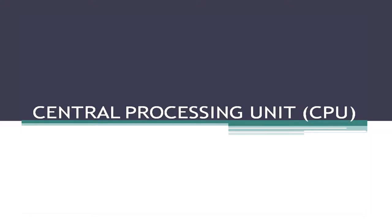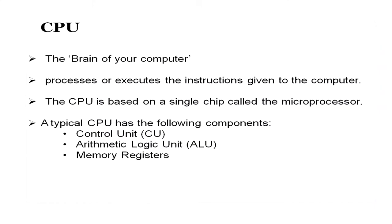After covering input devices, the next step is processing of data — for this we have the central processing unit, or CPU. The CPU is commonly referred to as the brain of the computer; it processes and executes the instructions given to the computer. A CPU is based on a single chip known as a microprocessor, and computers with microprocessors are called microcomputers. A typical CPU has three components: the control unit, the arithmetic logic unit, and the memory registers.